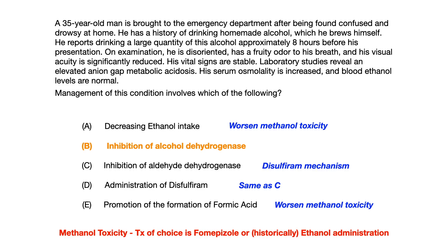When approaching questions dealing with poisonings, overdoses, or toxicity, identifying methanol requires you to know the substance ingested — whether it's paint thinner, homemade alcohol, or similar. Recognize the symptoms: the anion gap metabolic acidosis and visual changes are very high yield. Understand the pathway and the enzymes — alcohol dehydrogenase, aldehyde dehydrogenase — and the relationship between ethanol and methanol. Best of luck.